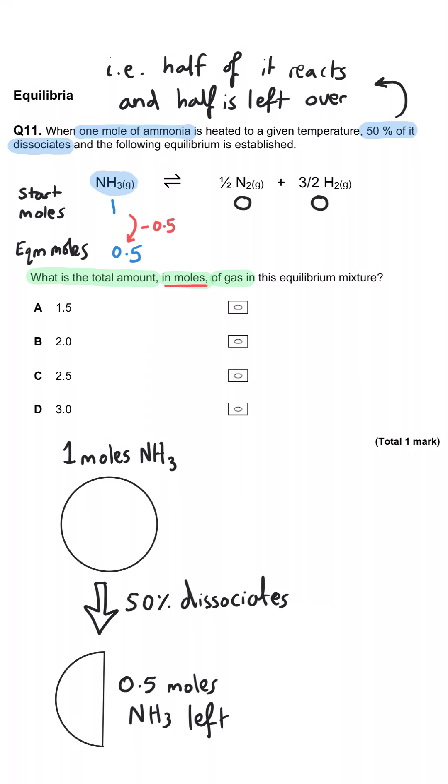Now the coefficients are really important here. We've got 1 to 0.5 to 1.5 as our coefficients. So if we are using up 0.5 moles of ammonia,